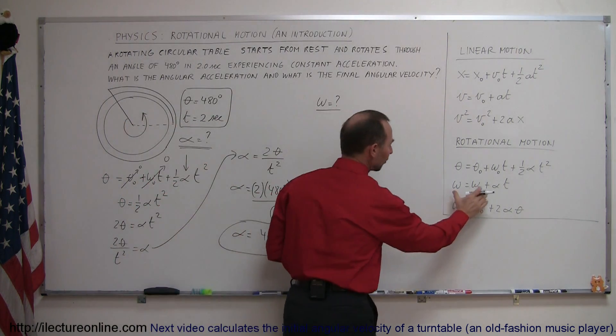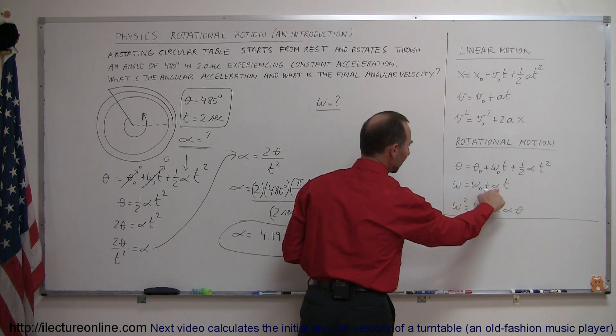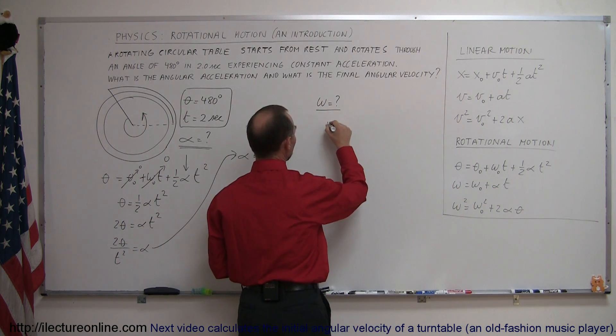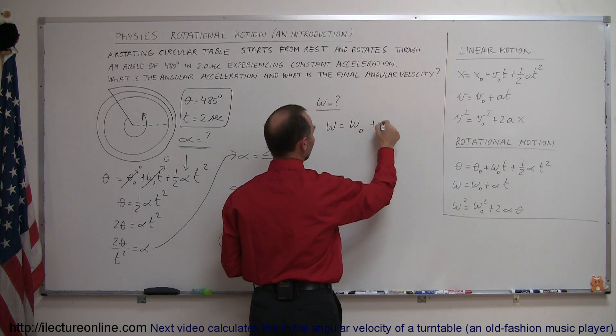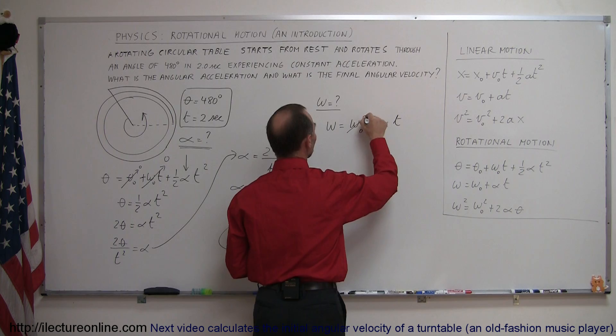Going back to our three equations of kinematics, we can use this one because we now have alpha and we have time. Omega equals omega naught, the initial omega, plus alpha times time. The initial omega is zero